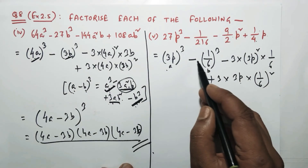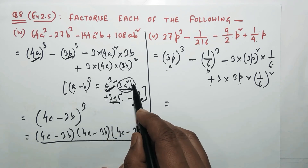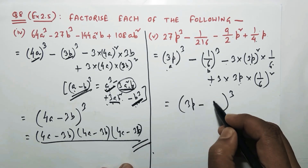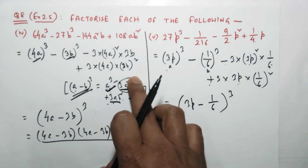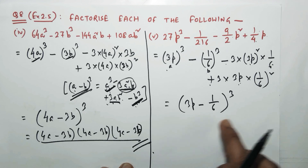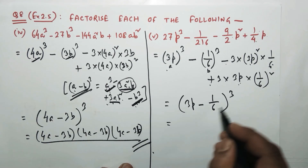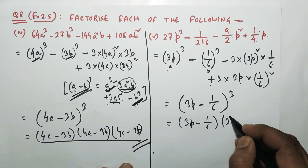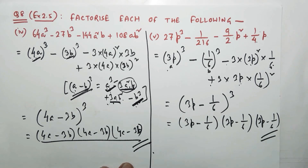So it is in the formula a³ - 3a²b + 3ab² - b³ = (a - b)³, which falls in the identity (a - b)³. Here a = 3p and b = 1/6, so the answer is (3p - 1/6)³. This means it is a multiplication of (3p - 1/6) three times — (3p - 1/6)(3p - 1/6)(3p - 1/6) — and this is your required factorization.